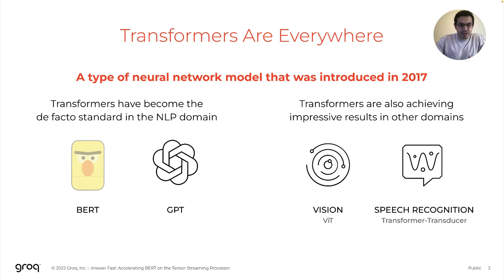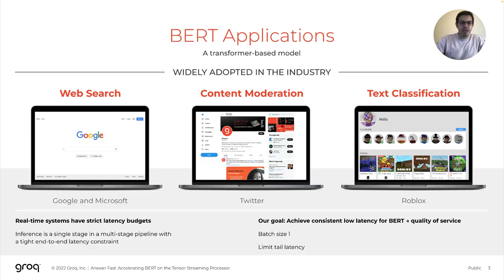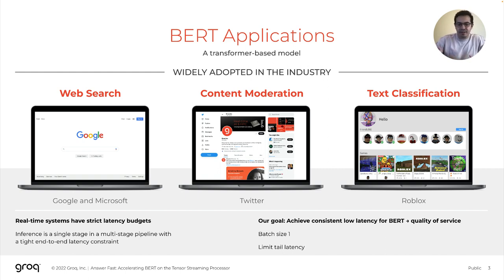In fact, transformers have been performing so well in the NLP domain that researchers have explored using them in other domains like vision and speech recognition. All in all, this really highlights how important a workload transformers have become. In this work, we focus on BERT, which is a transformer-based model that is widely adopted in the industry. I'm fairly confident that most of us deal with a service that has BERT in the backend on a daily basis. Google and Microsoft use it in their web search, and BERT is used in text classification, among many other examples.